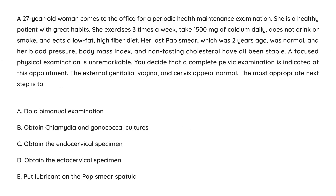A 27-year-old woman comes to the office for a periodic health maintenance exam. She is a healthy patient — exercises three times a week, takes 1,500 milligrams of calcium, does not drink or smoke, eats a low-fat, high-fiber diet. Her last pap smear, two years ago, was normal. Blood pressure, BMI, and non-fasting cholesterol have all been stable. Physical exam is unremarkable. You decide a complete pelvic exam is indicated; external genitalia, vagina, and cervix appear normal. Most appropriate next step is?